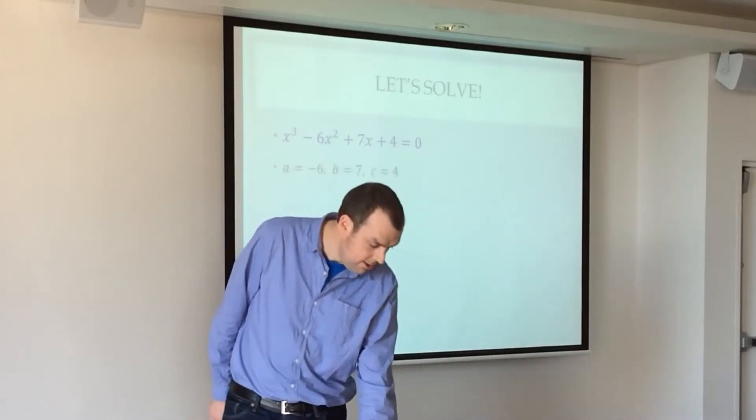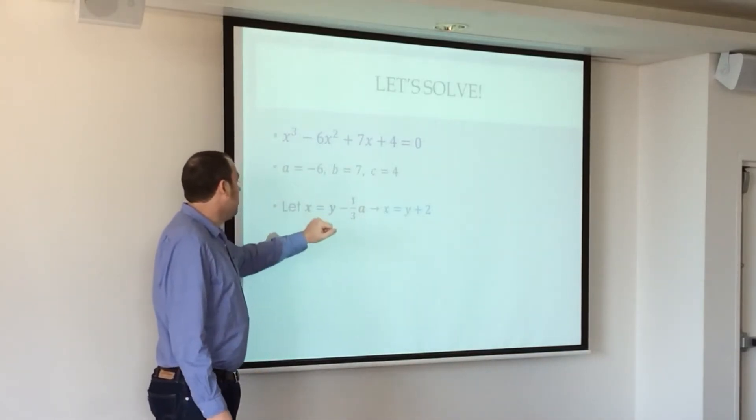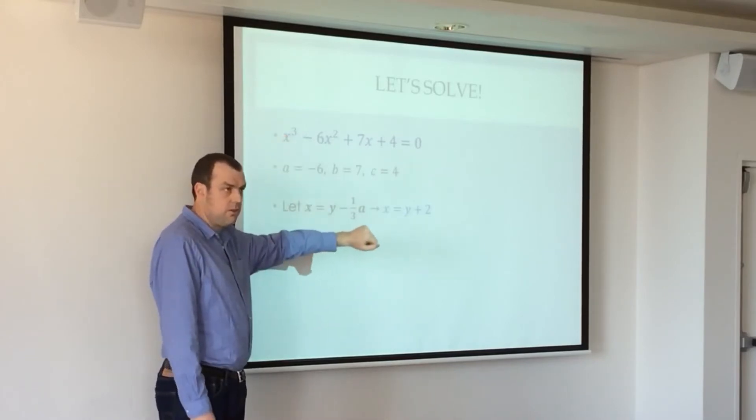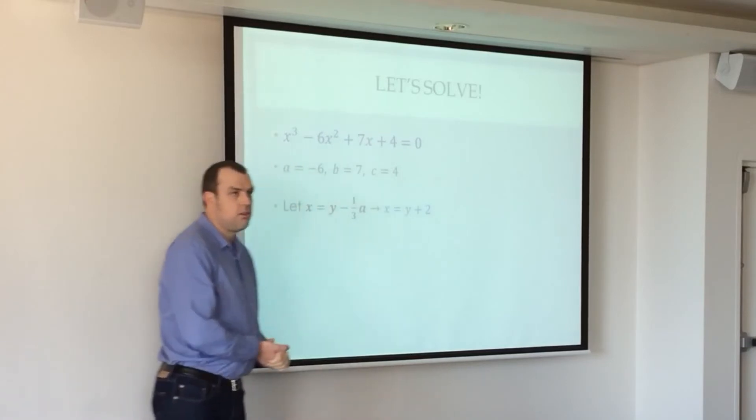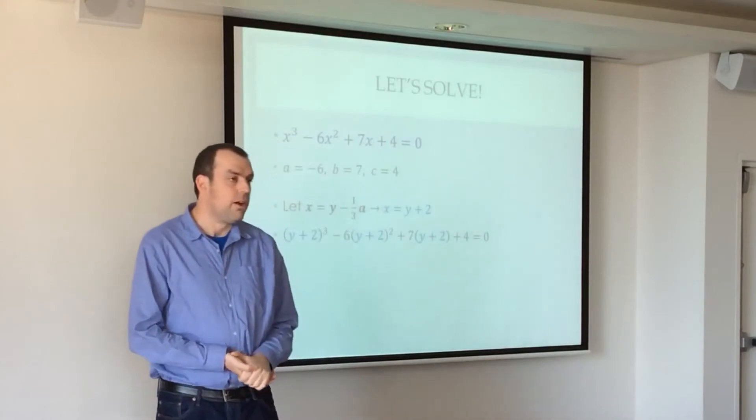So we've got a, b, and c there. Okay, first thing we do, we let x equal y minus a third a. All right, so we've got x here, we make a substitution. If we have x is equal to y minus a third a, so that's x equals y plus 2 for this particular one, and then we substitute, then we get that equation,